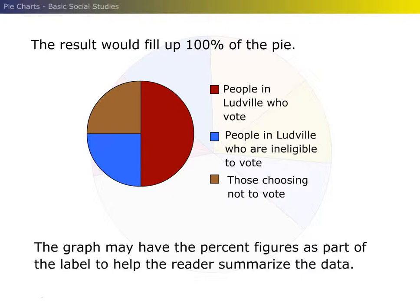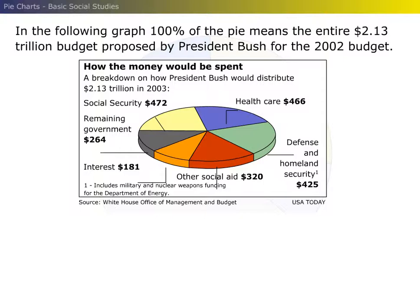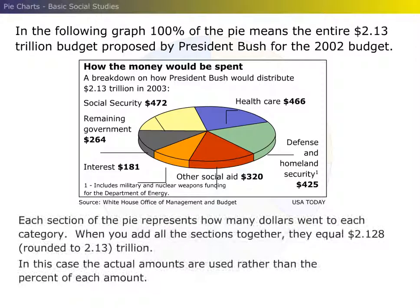The graph may have the percent figures as part of the label to help the reader summarize the data. In the following graph, 100% of the pie means the entire 2.13 trillion dollar budget proposed by President Bush for the 2002 budget. Each section of the pie represents how many dollars went to each category. When you add all the sections together, they equal 2.128, rounded to 2.13 trillion. In this case, the actual amounts are used rather than the percent of each amount.